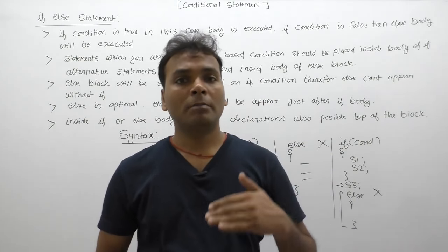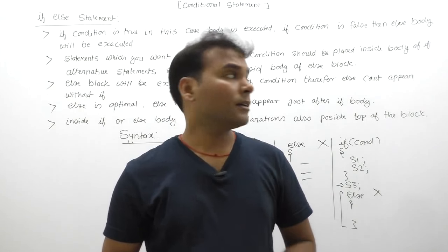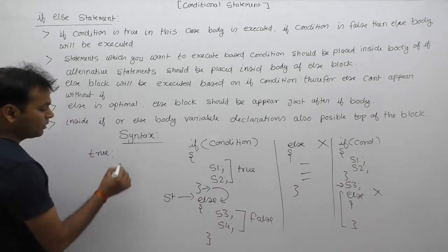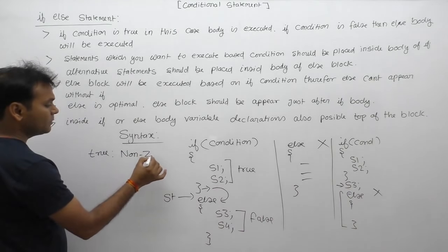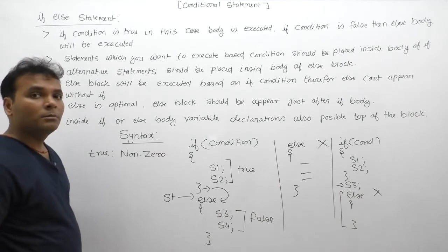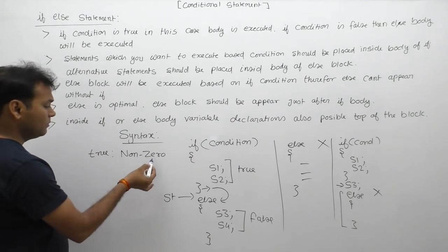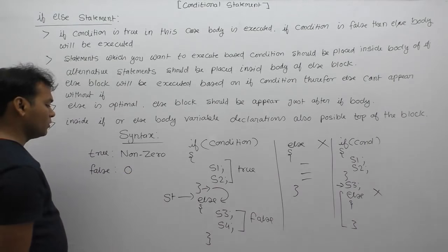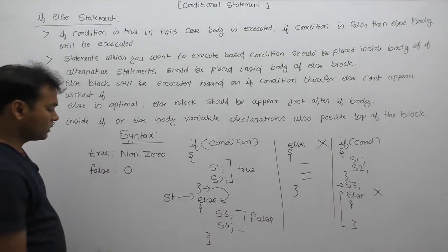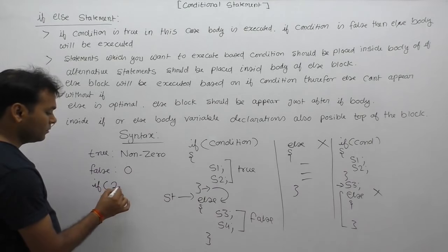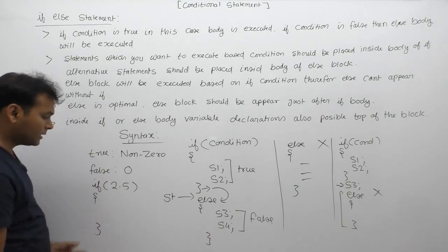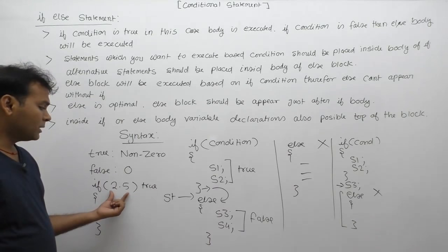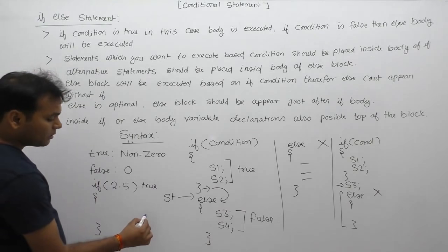Next, regarding conditions in C/C++: during conditional evaluation, there are two possible cases — either true or false. Any non-zero number in a condition is considered true. This includes negative numbers, decimal numbers — any non-zero number represents true. Zero represents false. For example, if the condition is 2.5, it is considered true because it is a non-zero positive number.